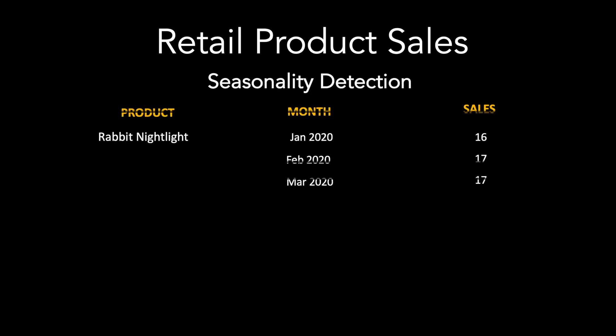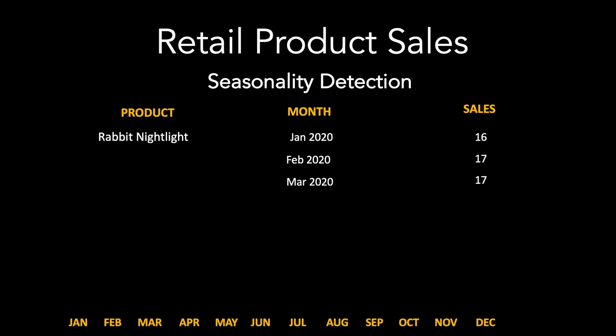In this example I will be using data on retail product sales to demonstrate seasonality detection. The data consists of product, month, and the sales for the month. Seasonality means that some specific months have higher sales compared to others.